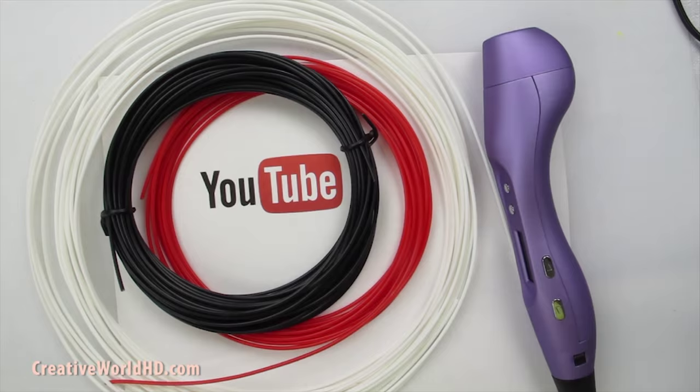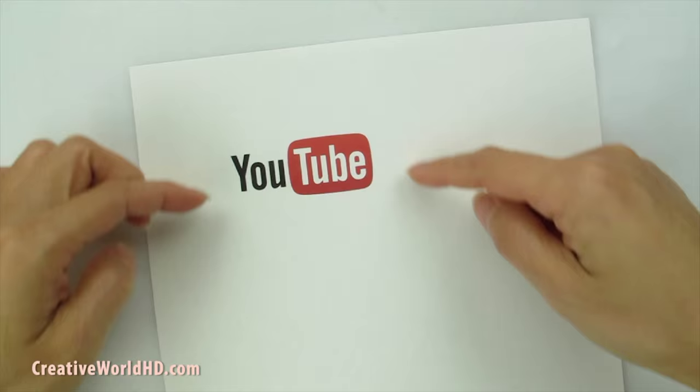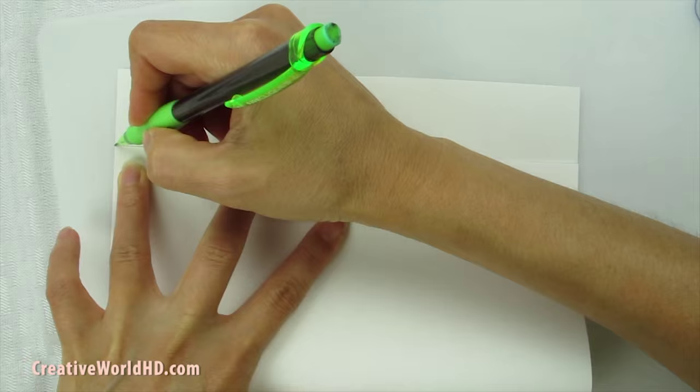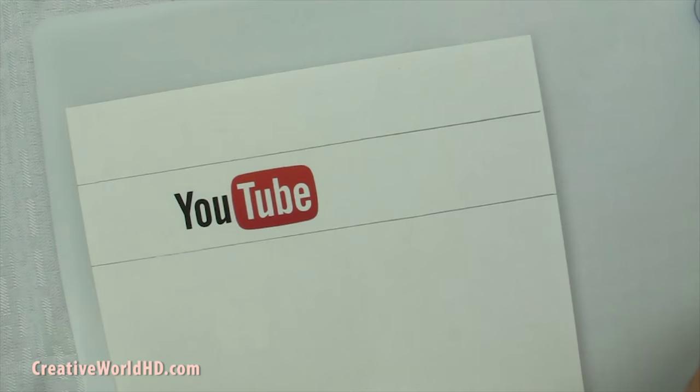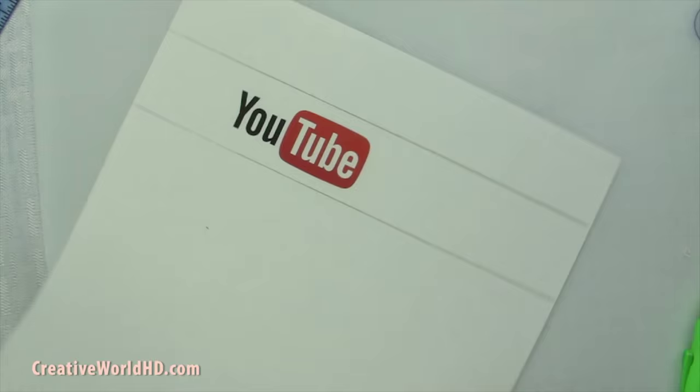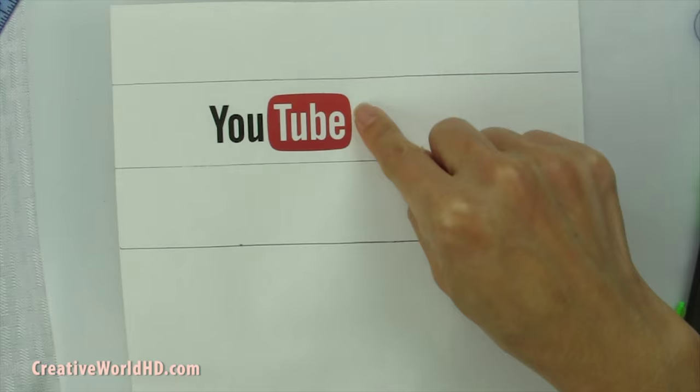First, we're going to take this YouTube logo and design the size that we want for the piggy bank. I'm just going to use this paper to draw the box. You can make it any size you like. Now I'm going to use a ruler because this side needs to be the same size as this side. The next one should be the same size as this one, because this is top and the next one will be the bottom.